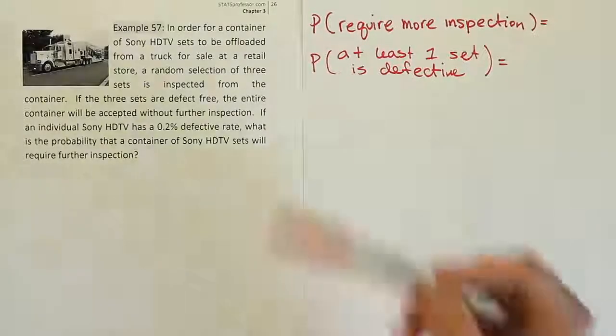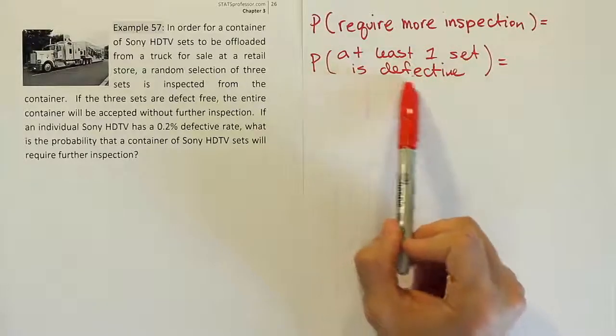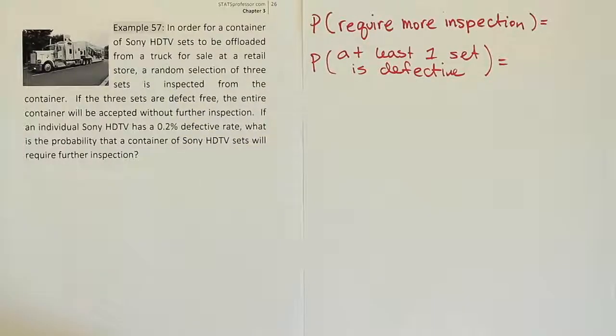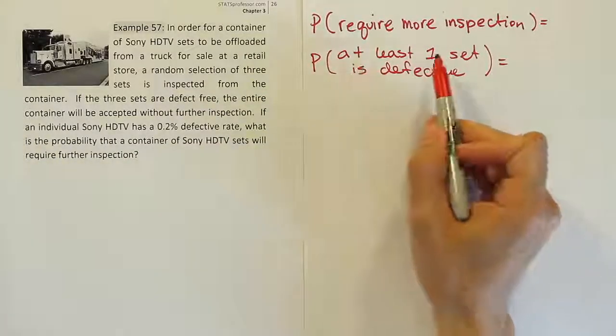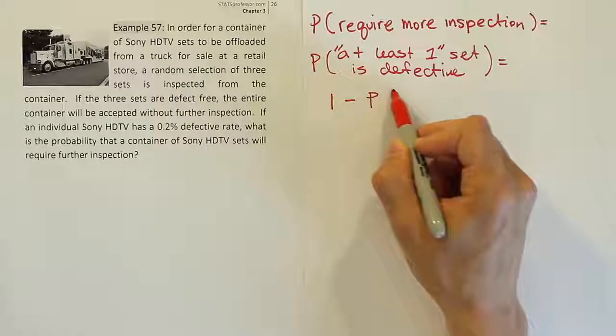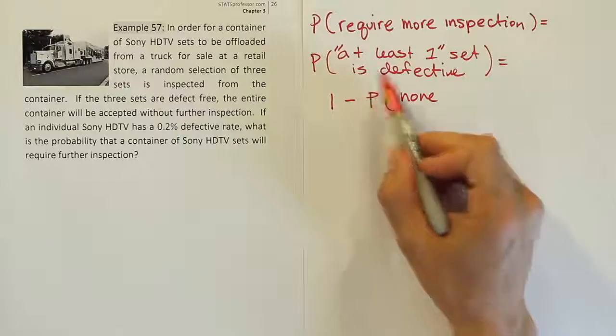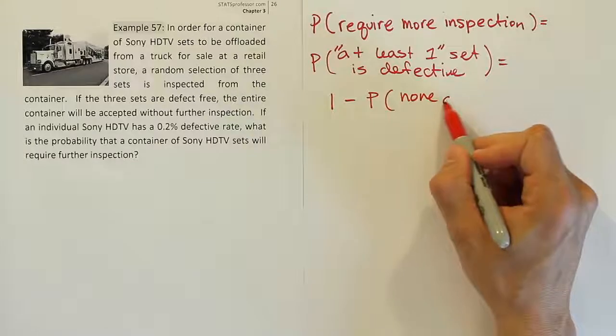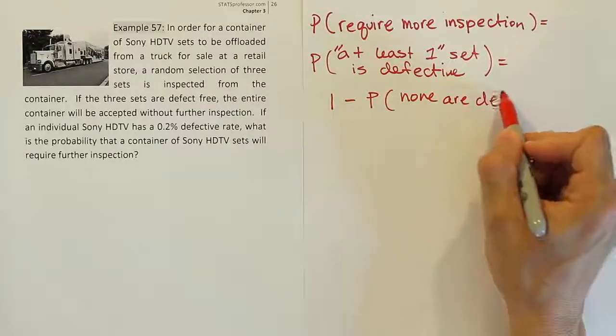So here it says probability that we require more inspection. Well, that means it's going to be the probability that at least one set is defective. I think that's going to be equivalent because, of course, why do we require more inspection if one or more of the sets are defective? So since that statement is equivalent to that statement, now we have a blueprint to solve the problem because we know that at least one is equal to one minus the probability that none are defective in this case.